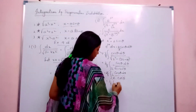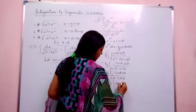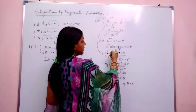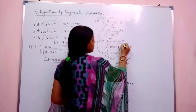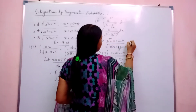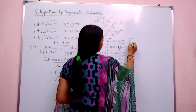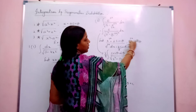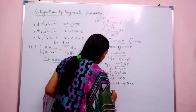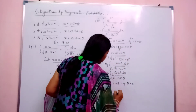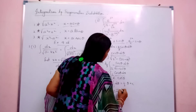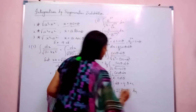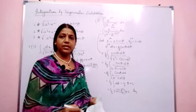Now what is remaining is 1 by 3 integration of d theta. So the answer is 1 by 3 theta plus constant. Now what is my theta? From the assumption, e to the power 3x by 2 equals sin theta, so theta equals sin inverse of e to the power 3x by 2. Therefore the final answer is 1 by 3 sin inverse of e to the power 3x by 2 plus C.